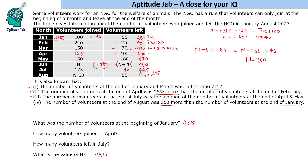So the answers are: the value of N is 180; the number of volunteers who joined in April is 125; and the number of volunteers who left in July is 140. This was the solution to the set.